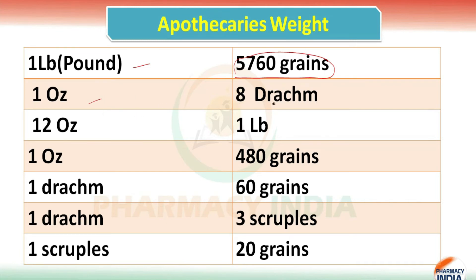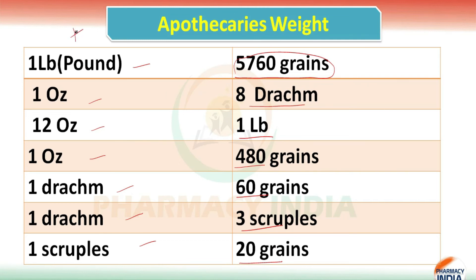One oz is equal to 480 grains, one drachm is equal to 60 grains, one drachm is equal to three scruples, and one scruple is equal to 20 grains. Students, sometimes questions may also be asked from these conversions, so try to learn them as they are very important for your competitive exam. Thanks for watching.